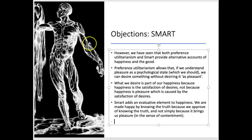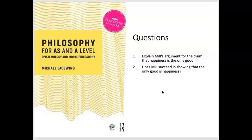Leiswing, at the end of his account of Mill's theory, asks two questions. First: explain Mill's argument for the claim that happiness is the only good — something you should be able to do from this PowerPoint and the accompanying notes. And secondly: does Mill succeed in showing that the only good is happiness? That's a very complicated, evaluative one, and something we will also be looking at further.